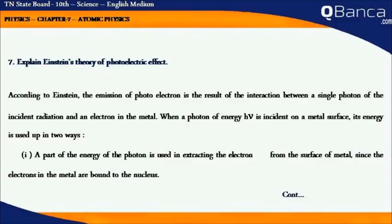When a photon of energy hν is incident on a metal surface, its energy is used up in two ways. The first way: a part of the energy of the photon is used in extracting the electron from the surface of the metal, since the electrons in the metal are bound to the nucleus.